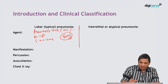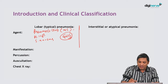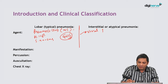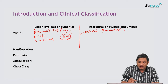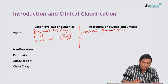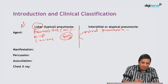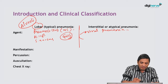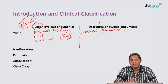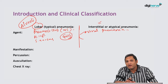In contrast, interstitial pneumonia is typically caused by viruses. All viral pneumonias are of the interstitial type. They will infect the interstitium, not the alveoli. Lobar pneumonia characteristically involves the alveoli, whereas interstitial or atypical pneumonia will infect only the interstitium and spare the alveoli.